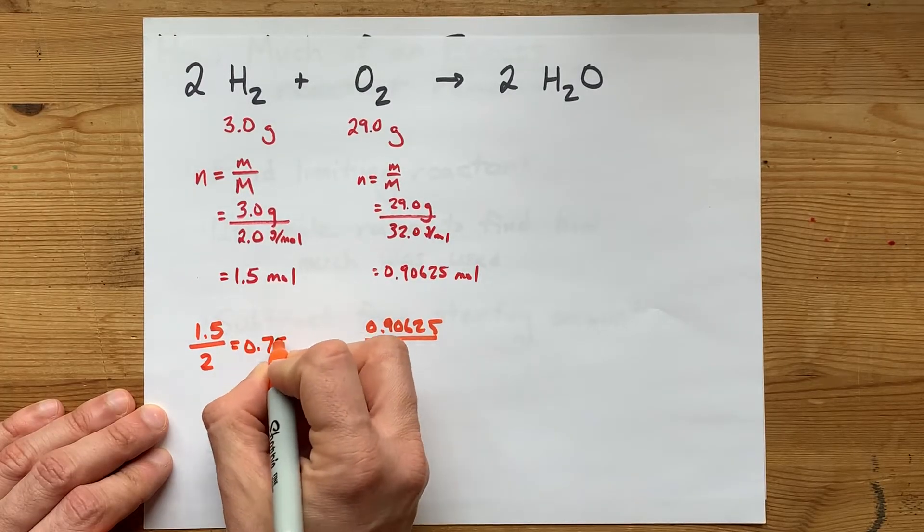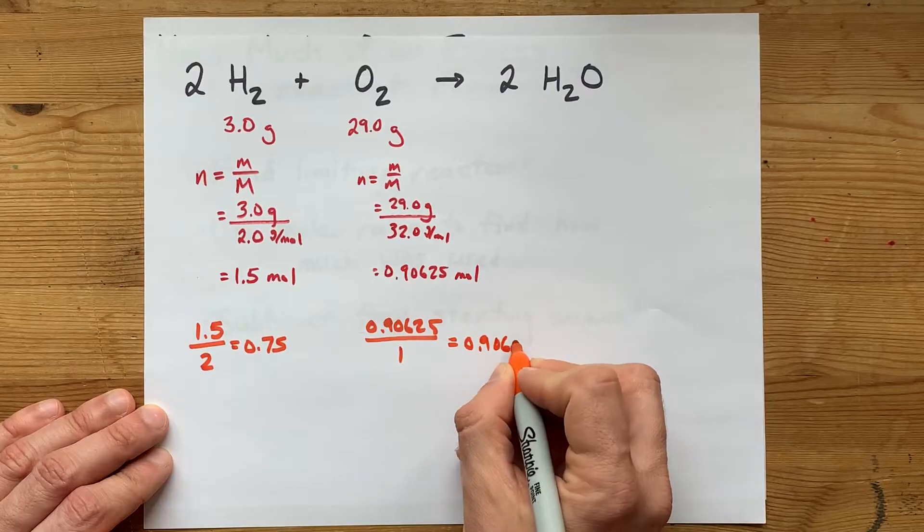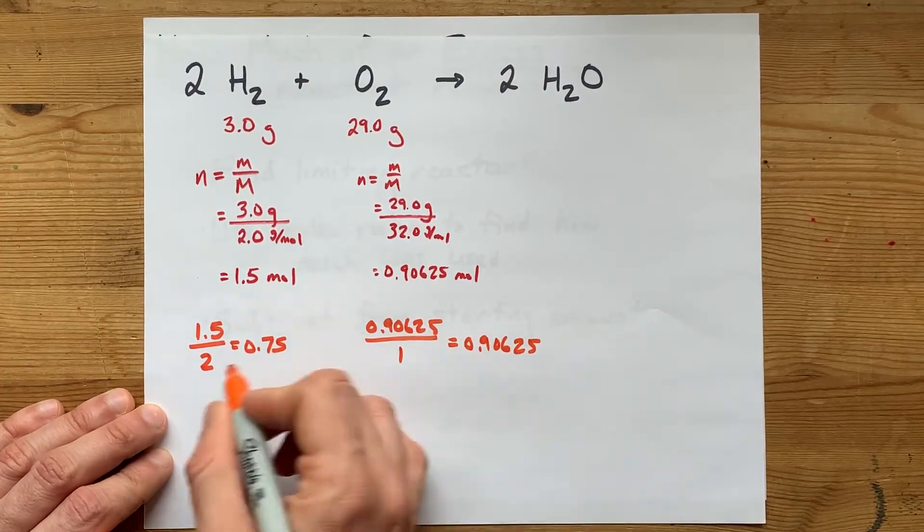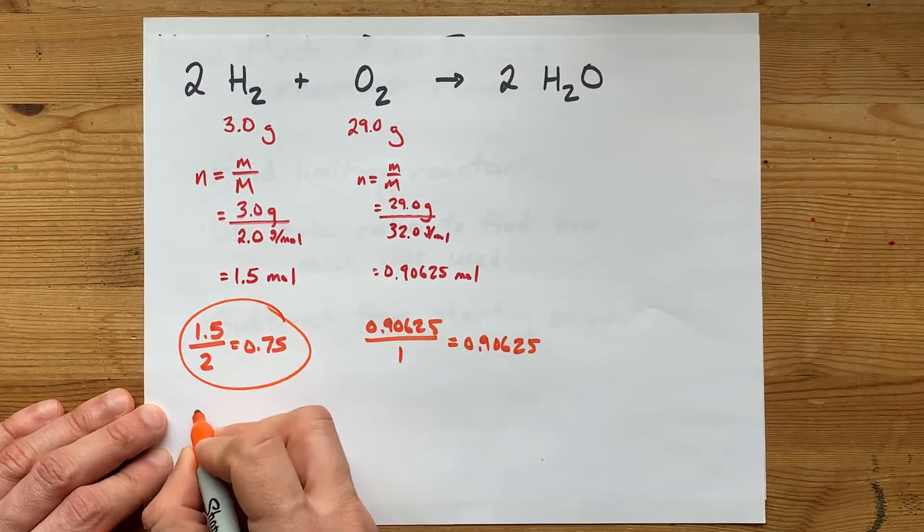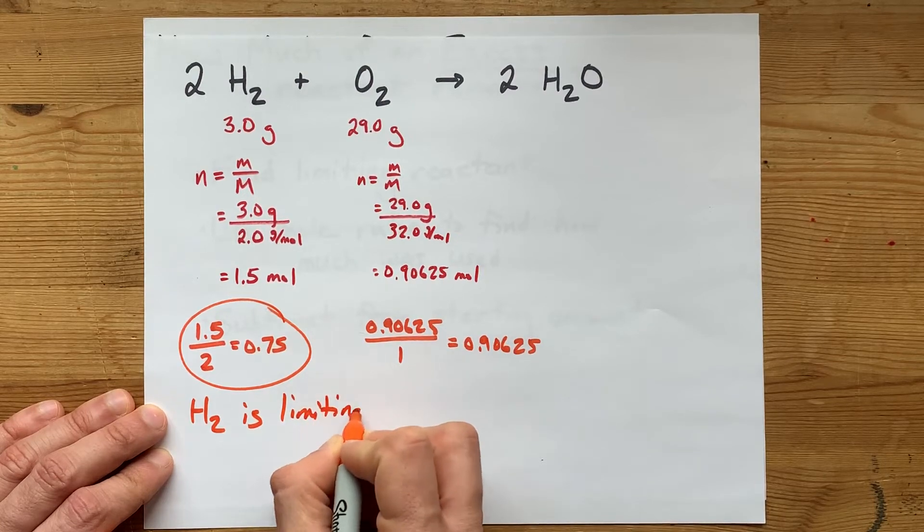When you do that, you'll get two numbers, 0.75 and 0.906 again here. Whichever of those numbers is smaller, that's the limiting reactant. So that means H2 is the limiting reactant here.